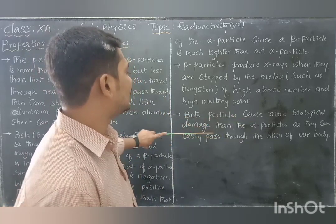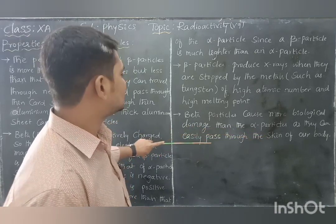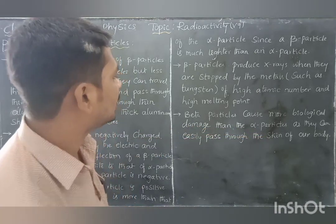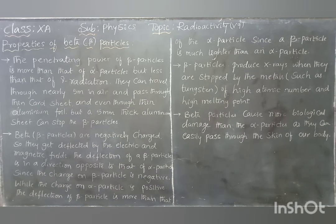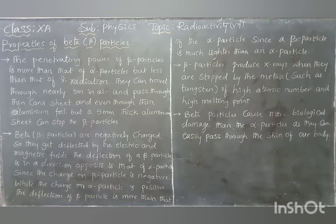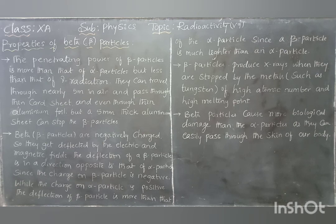Beta particles cause more biological damage than alpha particles because they can easily pass through the skin of our body. The biological damage in the case of alpha particles has some effect, but beta particles are a little bit higher in damage. These are the properties of the beta particles, some of which we are comparing with alpha particles and gamma particles.